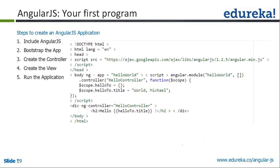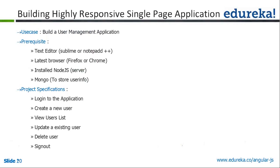Next we have a directive called ng-app. Whenever you include the AngularJS plugin and run it in the browser, the plugin will look for the directive called ng-app. Once it finds that directive, that particular element will be the root of your AngularJS application. In this example, we have ng-app in the body, so everything declared inside the body will be considered as AngularJS components - ng-controller, ng-click events, everything.